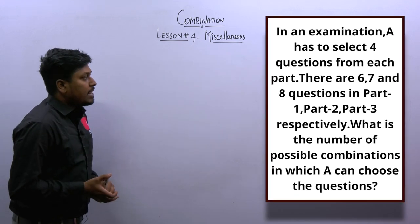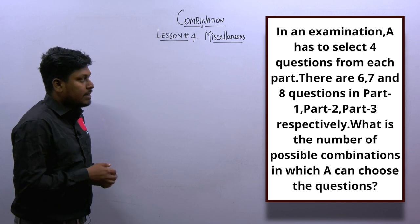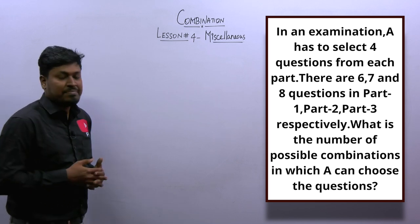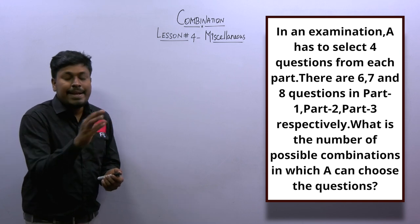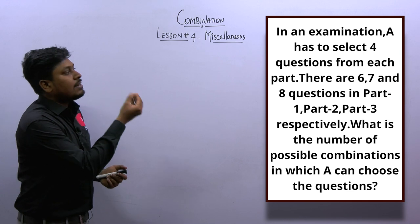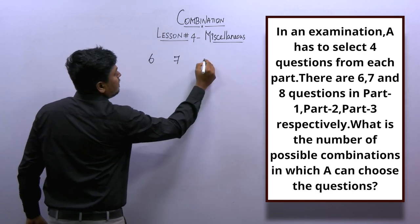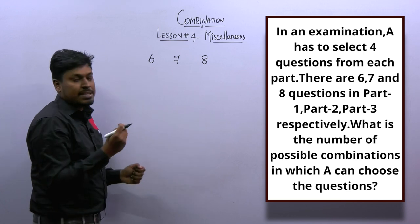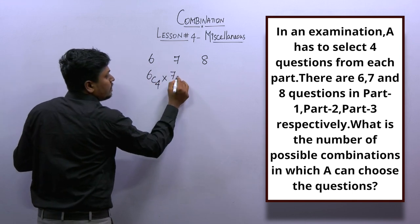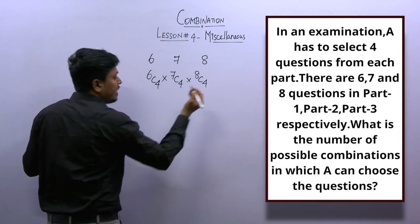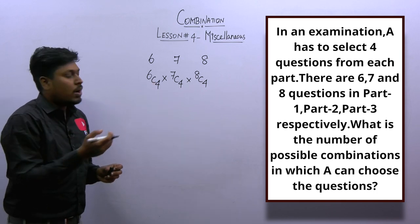Question number 4: In an examination, a student has to select 4 questions from each part. There are 6, 7, and 8 questions in Part 1, Part 2, and Part 3 respectively. What is the number of possible combinations? This is similar to question 2 — the student selects 4 questions from each of the 3 parts, so the expression is 6C4 × 7C4 × 8C4.